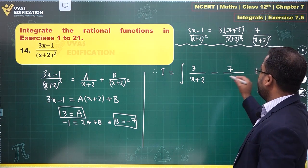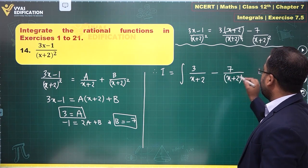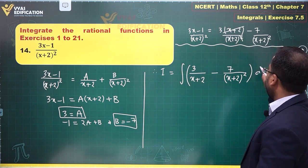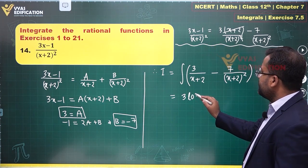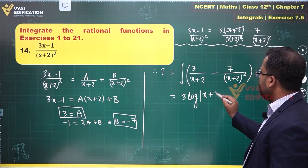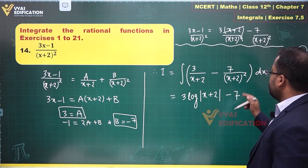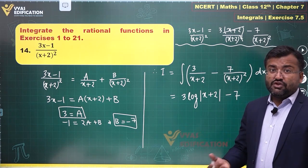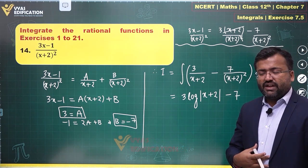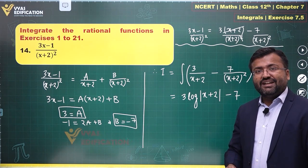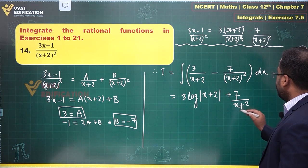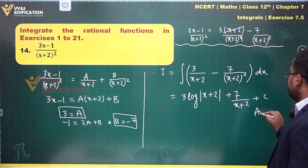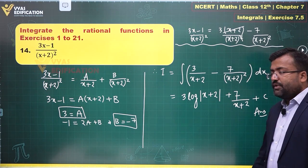This is what we are supposed to integrate. 1 upon x plus 2, the integral is very simple - this is 3 times log of modulus x plus 2. Minus 7 is okay. 1 upon x plus 2 square is similar to 1 upon x square, so 1 upon x square, the integral will be equal to minus 1 upon x. That becomes minus 1 upon x plus 2, plus constant.